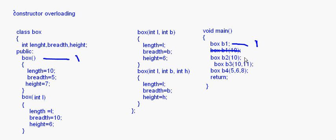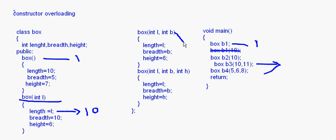When I say box b2 with one integer parameter 10, it looks for the constructor with one integer parameter, so L becomes 10, length becomes 10, breadth is 10, and height is 6. For box b3 with two integer parameters 10 and 11, the two-parameter constructor is invoked: L becomes 10, B becomes 11. For box b4 with three parameters 5, 6, 8, the constructor box(int L, int B, int H) is called and length, breadth, and height are assigned accordingly.